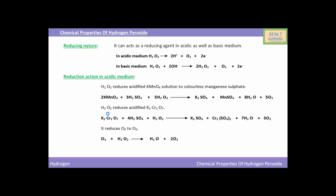Hydrogen peroxide also reduces acidified potassium dichromate into chromium sulfate. You can see the reaction below. K₂Cr₂O₇ (potassium dichromate) when reacted with H₂SO₄ and H₂O₂ (hydrogen peroxide), hydrogen peroxide reduces potassium dichromate to Cr₂(SO₄)₃ (chromium sulfate).